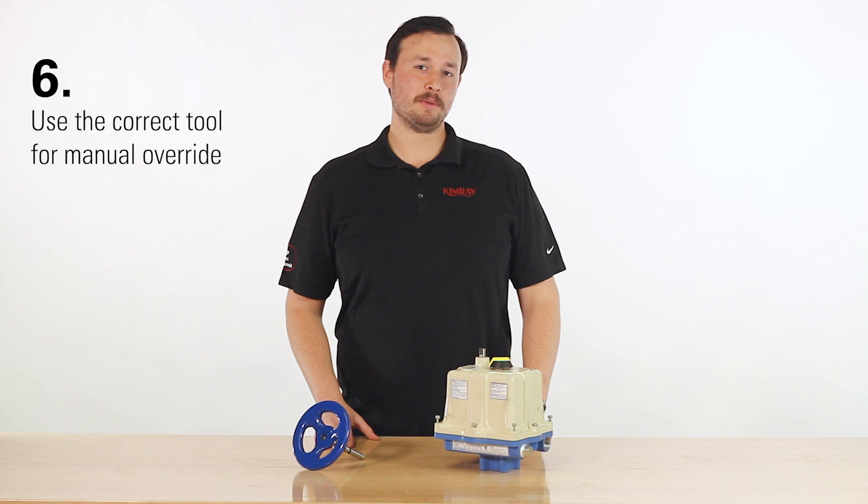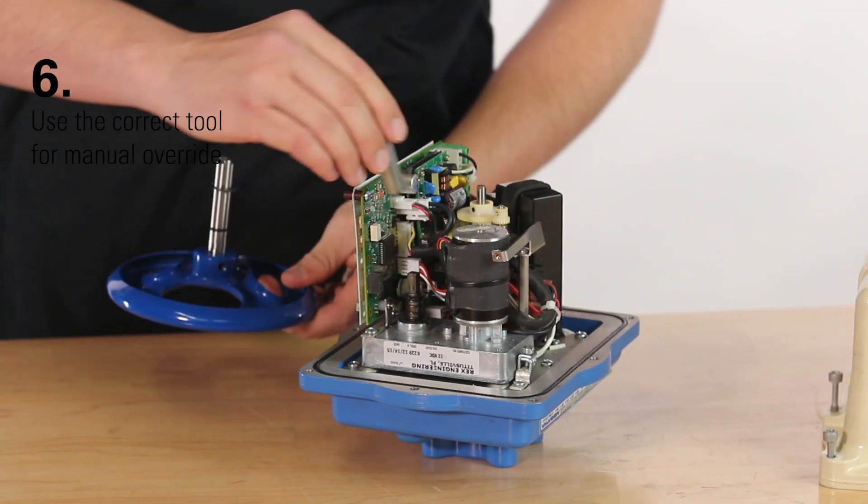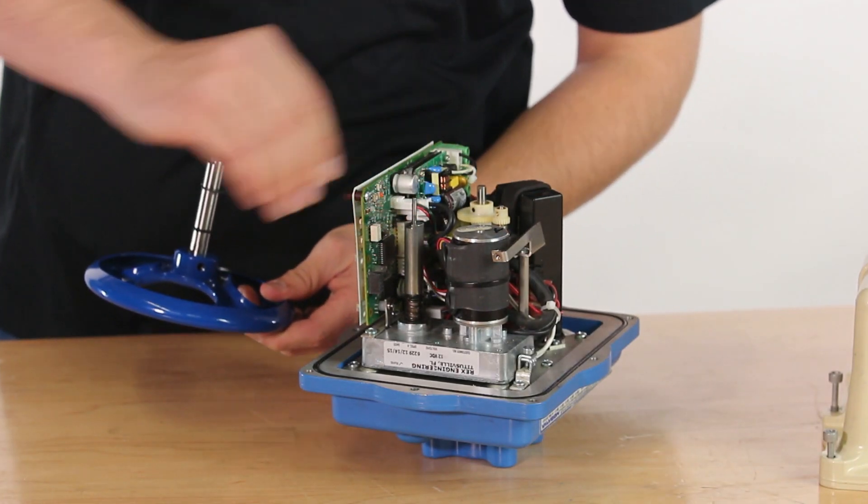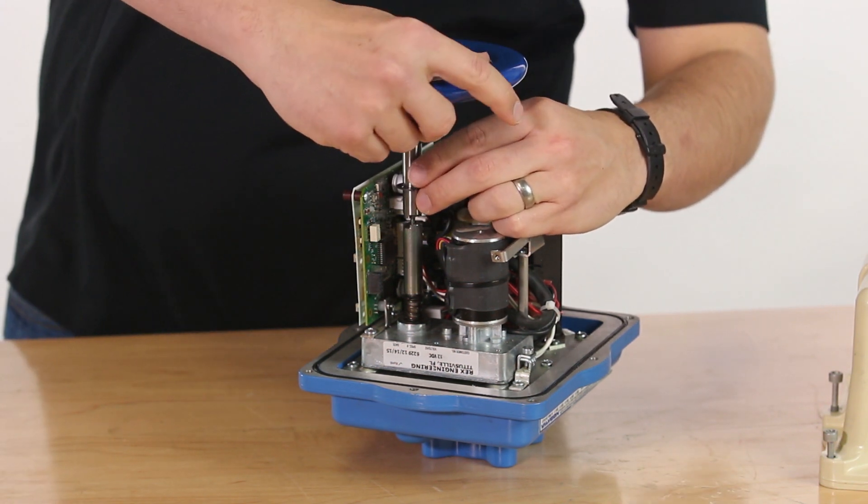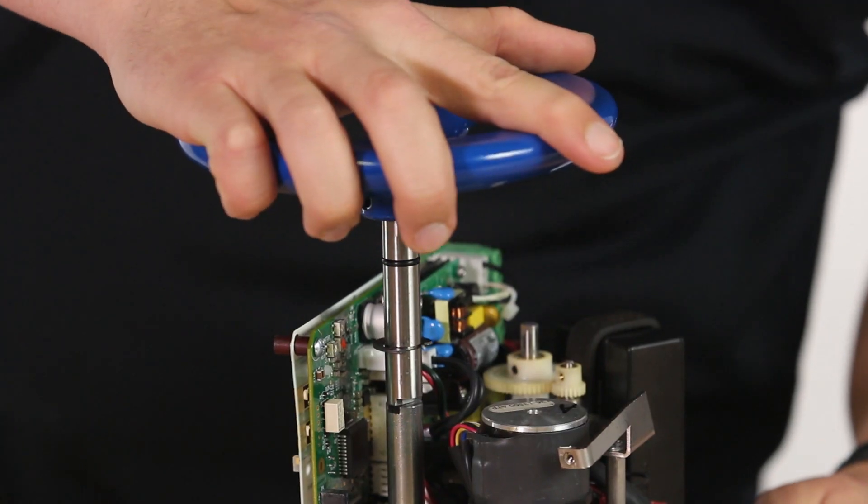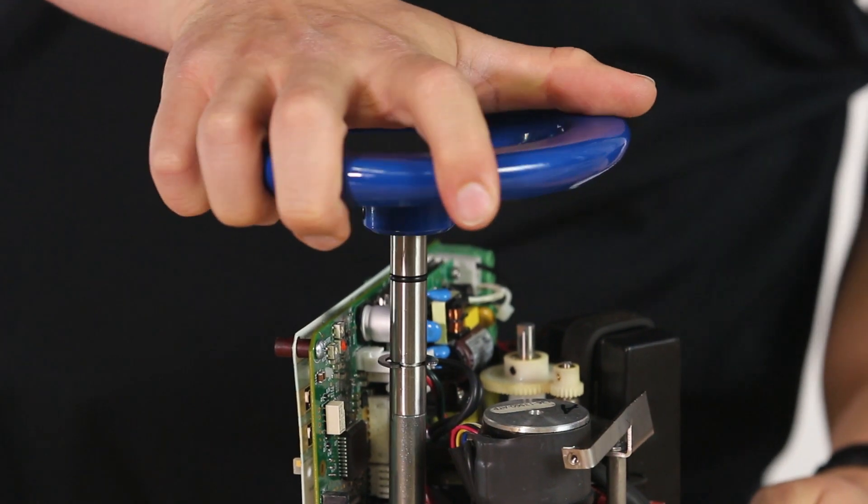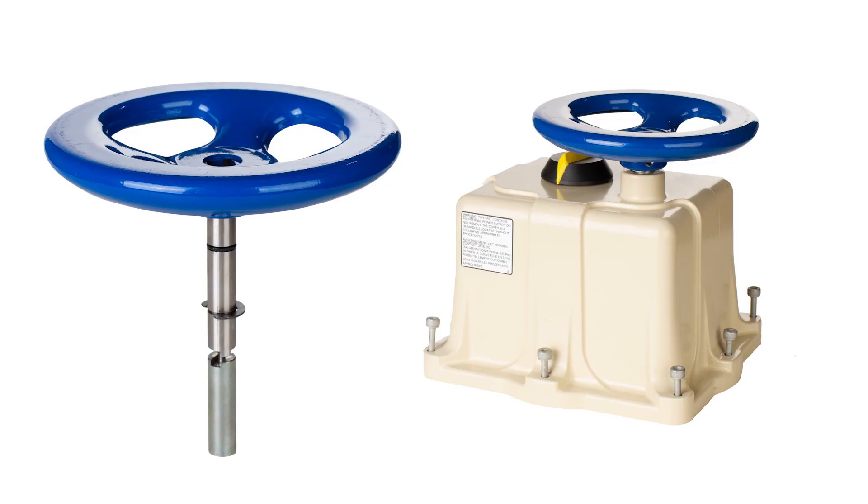If you need to use the manual override for any reason, make sure to use the correct tool. If you attempt to use a crescent wrench, you can damage the sensitive internal parts. Contact your Kimray provider to order a handwheel. If you have a newer model, you will need a handwheel with a stem attachment.